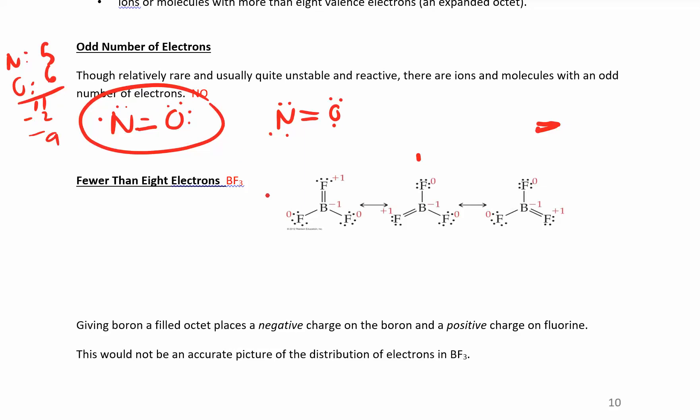So fewer than eight electrons. There's a couple elements that are happy having fewer than eight electrons. Boron is one of them. And we already talked about hydrogen, right? Hydrogen is happy having two electrons or one bond. Beryllium is another one. He's happy having four electrons around it or two bonds. And boron is happy having six electrons around it or three bonds.